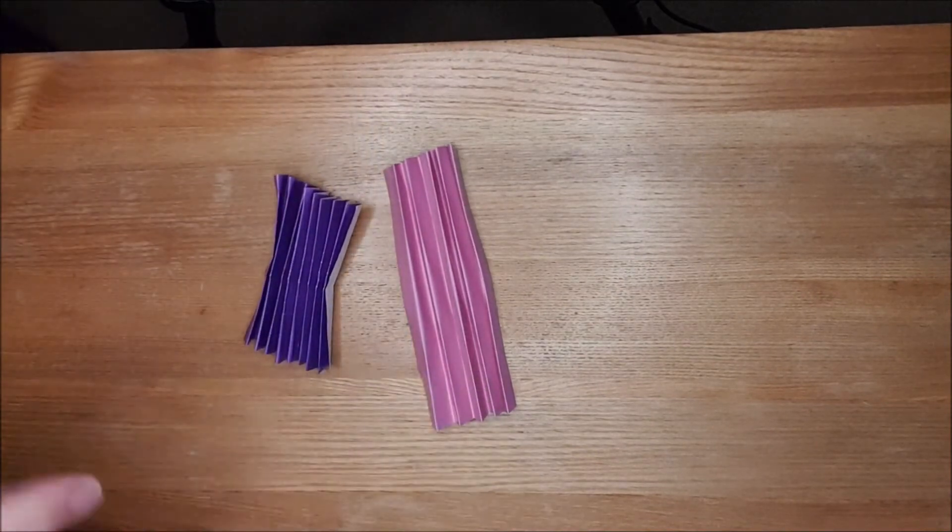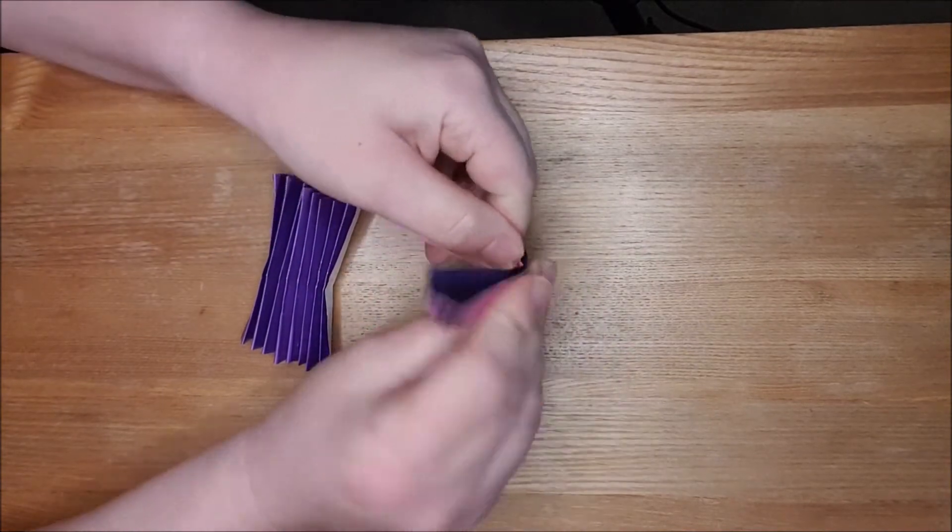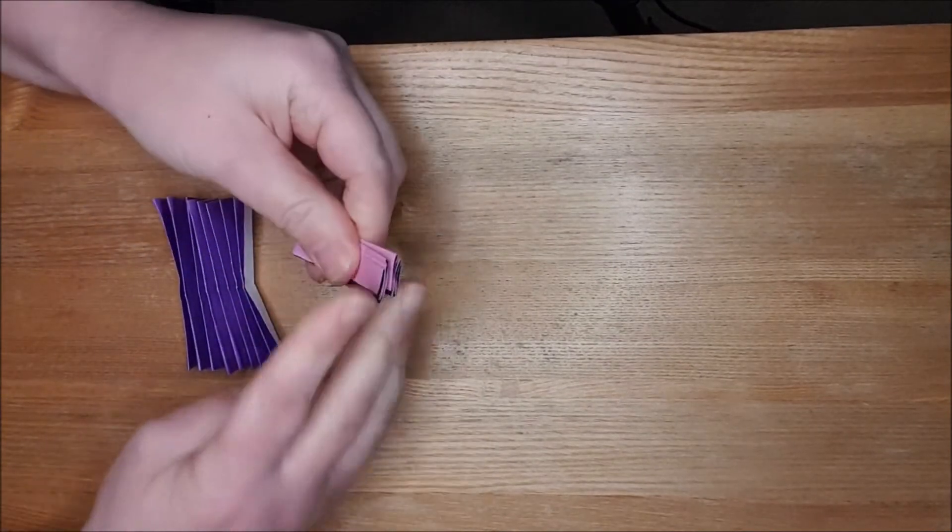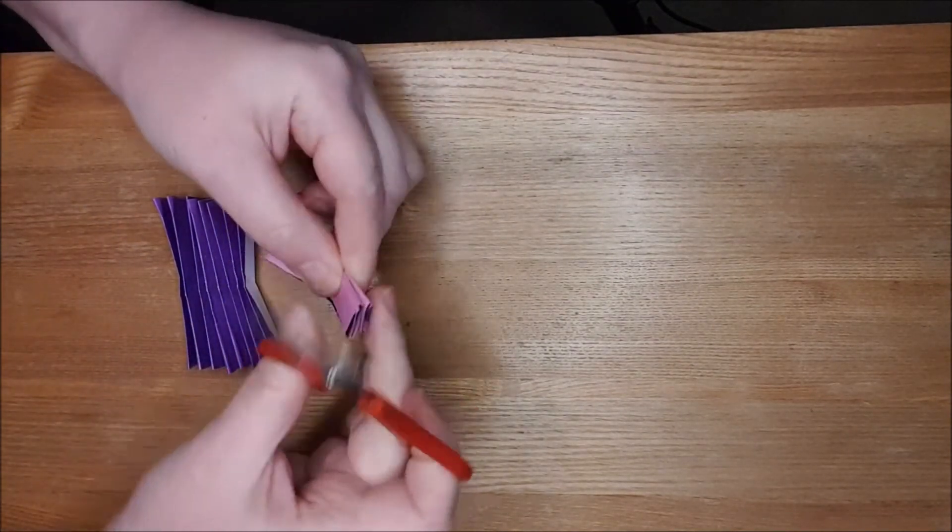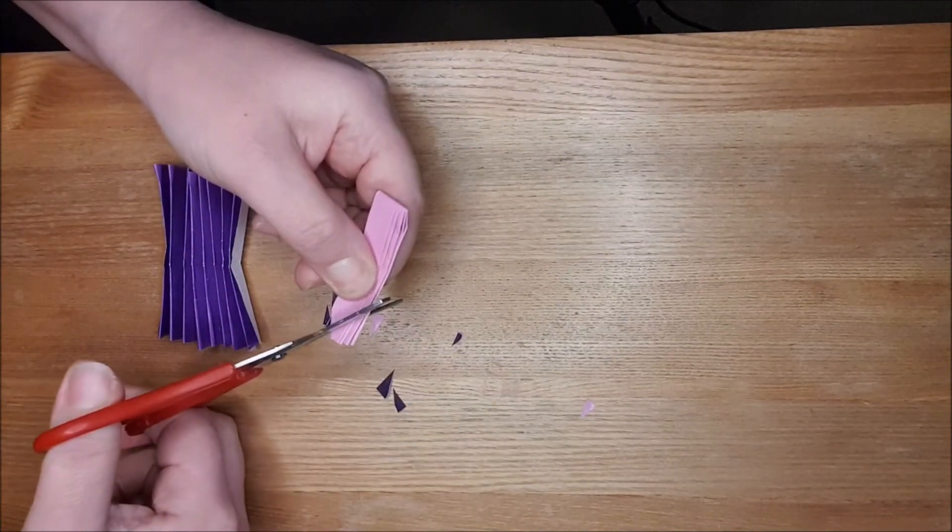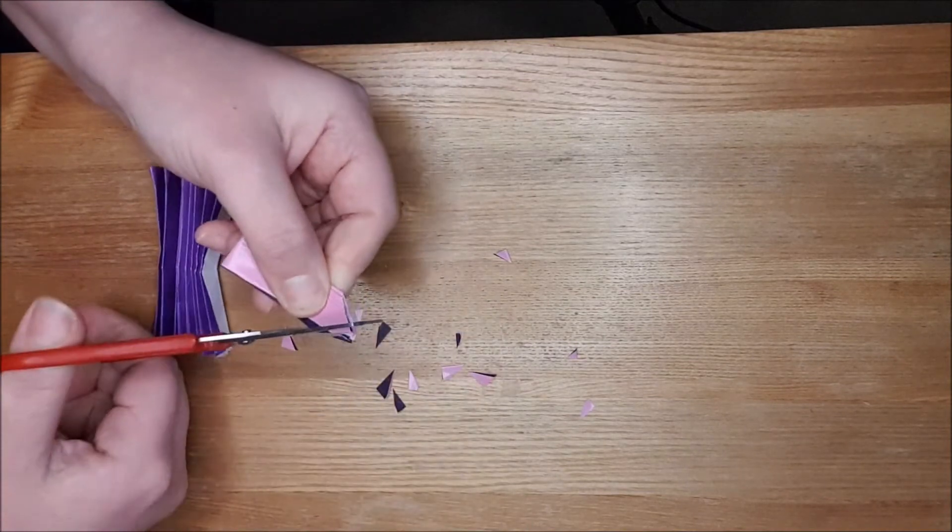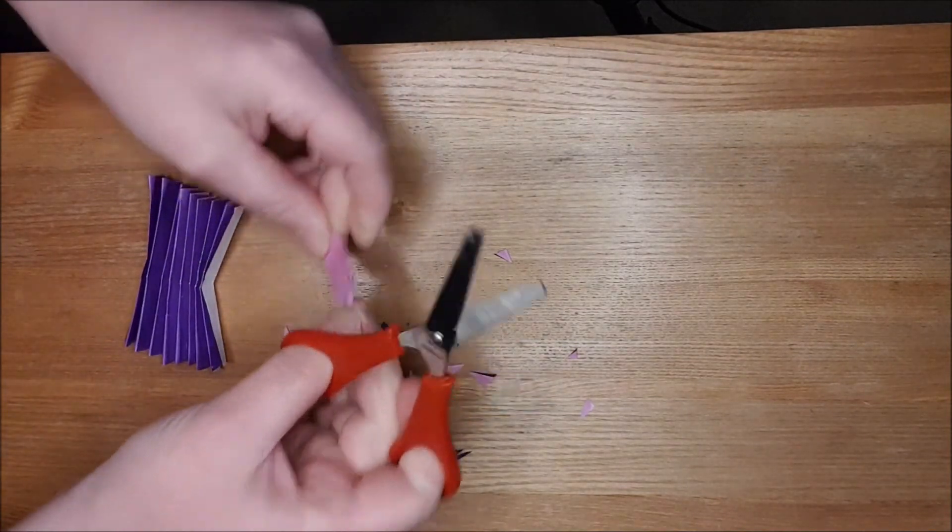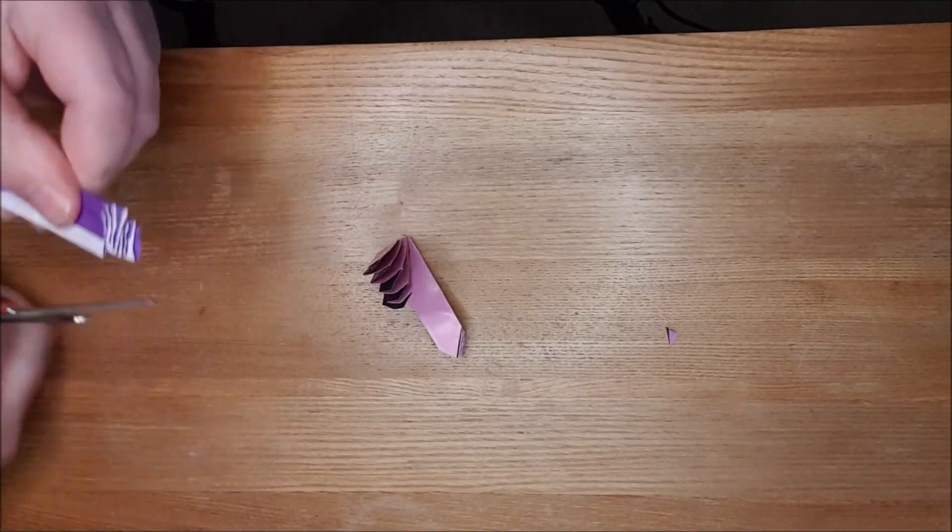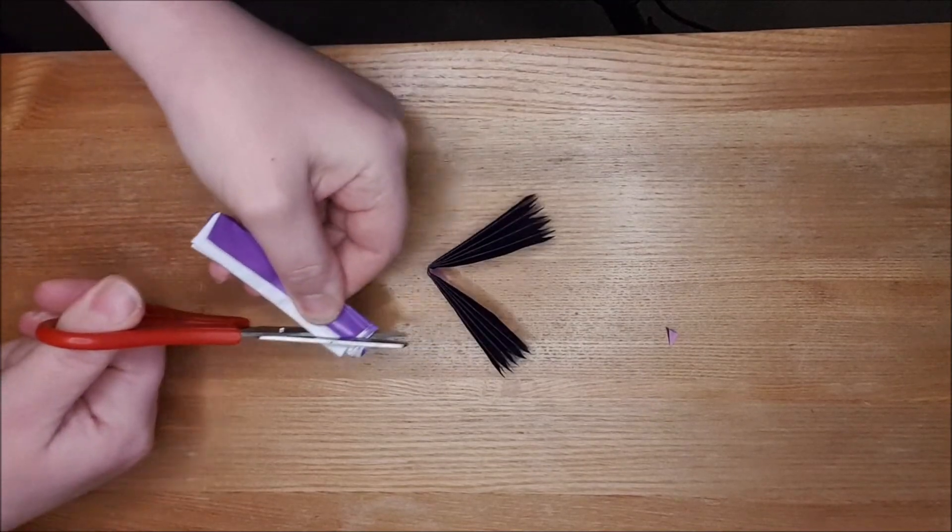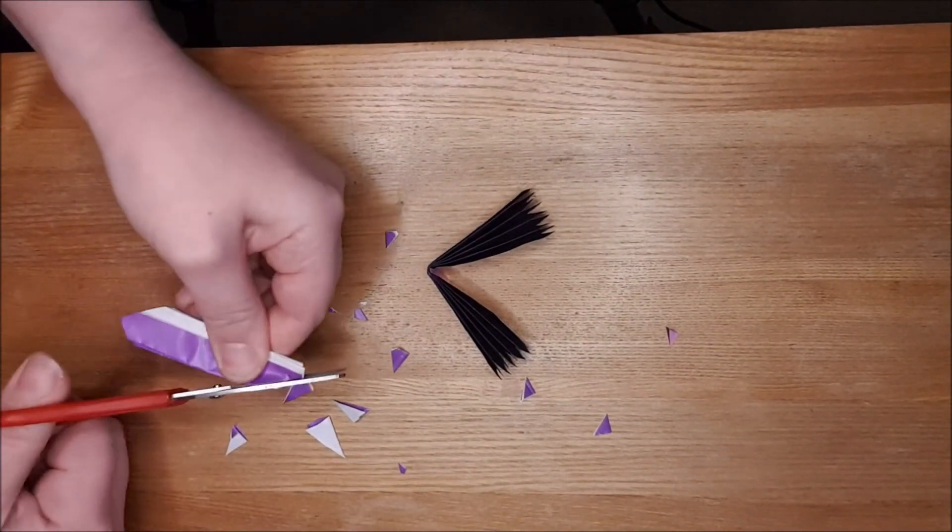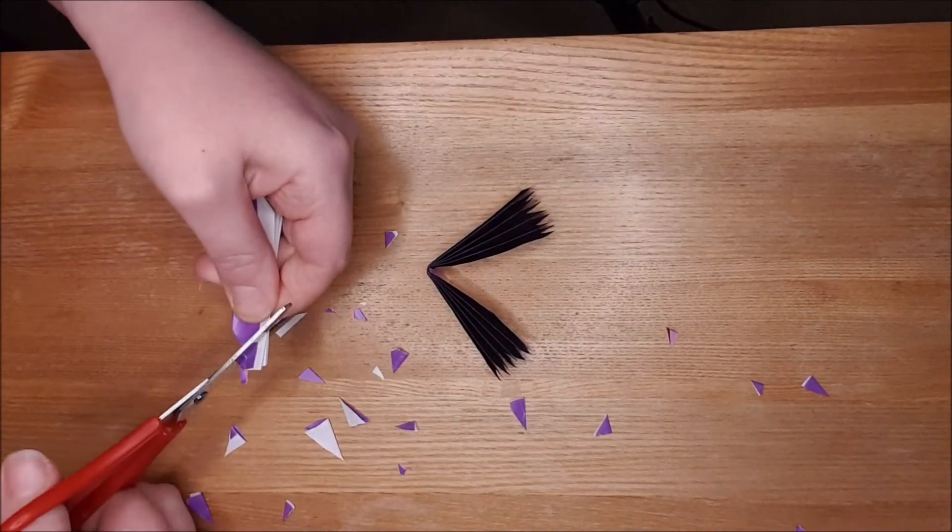Then what you do is you fold it in half, like this, and then you need to cut the corners off to make a point, almost. So one there, and one there. Trim it up a bit to make that a bit tidier. Make sure it's nice and tidy. And the same on this side. Trim it up a bit there, and a bit on this side. There we go. And then one there, and one there.